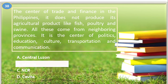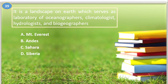Number thirty-nine. It is a landscape on Earth which serves as a laboratory for oceanographers, climatologists, hydrologists, and biogeographers: A. Mount Everest, B. Andes, C. Sahara, D. Siberia. The answer is letter C, Sahara.